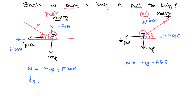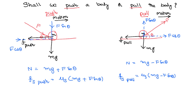If we write the static frictional force in the case of the push, it is mu times normal reaction, where normal reaction is mg plus F sin theta. Similarly, for the pull, the coefficient of static friction is the same because the surfaces are the same, but the normal reaction is less. So it is very clear that frictional force in the case of the pull is less than that of the push.